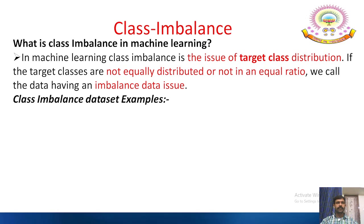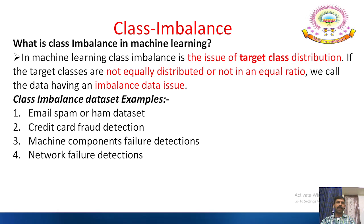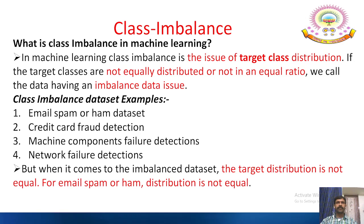The class imbalance dataset examples include: email spam or ham dataset, credit card fraud detection, machine components failure detection, and network failure detection. When it comes to imbalanced data, the target distribution is not equal — for example, email spam or ham distribution is not equal. Then how do we deal with imbalanced data?